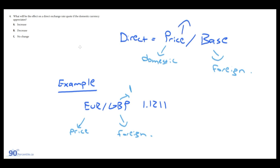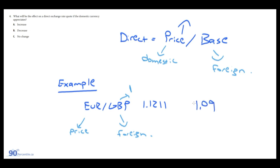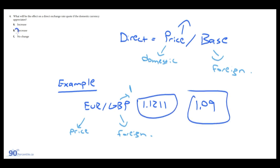Going back to the question: what will be the effect on a direct exchange rate quote if the domestic currency appreciates? If the euro appreciates, it's going to cost fewer euros to buy one pound — for instance, it could drop from 1.1211 to 1.09 euros per pound. So this whole number would decrease.